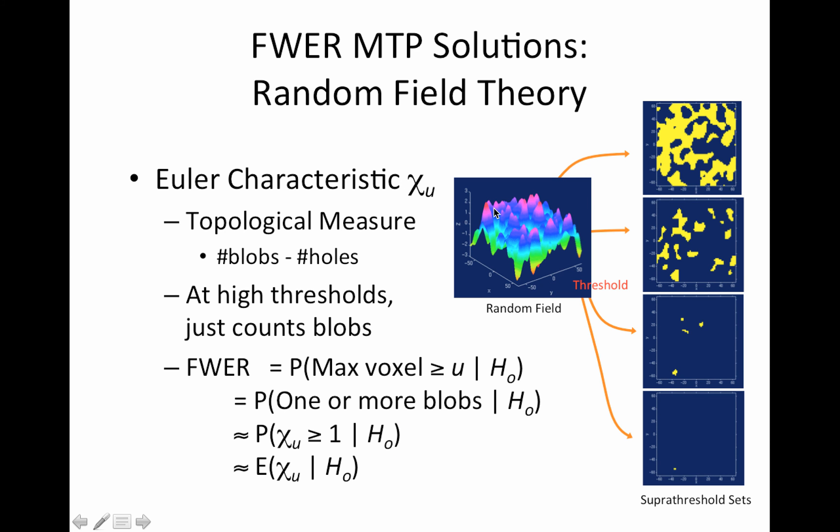So the way we get at that distribution is to use random field theory or one way. And we focus on this thing called the Euler characteristic, which is this χ_u.